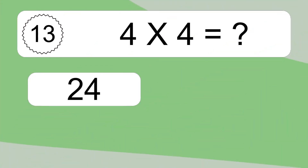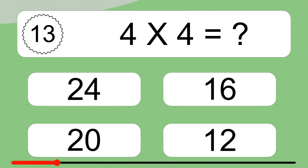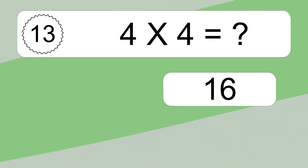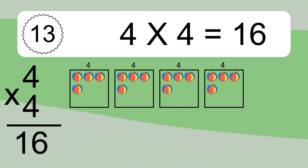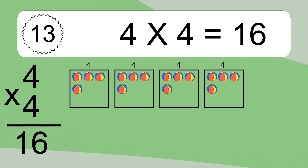4 times 4 equals what? We have 8 boxes and each box has 4 colorful balls inside. If you count all the balls in all the boxes together, you will have 4 times 4 balls. This equals 16 balls.